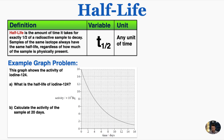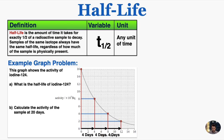We can end with a graph problem. This graph shows the activity of iodine-124. What is the half-life of iodine-124? I can start at the top where the activity is 16, and see how much time it takes to get to exactly half of that activity, which will give me the half-life. I can see that the time it takes to get to 8 is four days. So the half-life of this substance is four days. And to confirm: half of 8 is 4, so it should take another four days to get from 8 to 4, and that's exactly what happens. And from 4 to 2, another four days pass, and so on. So that's how you find the half-life from a graph.